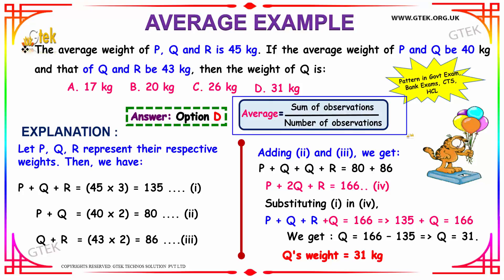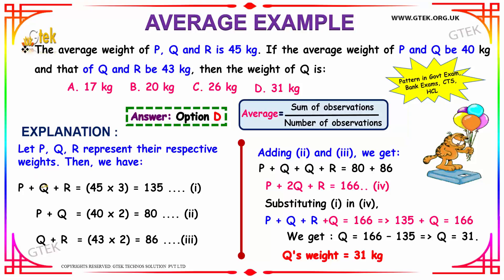The sum of observations — that is, the sum of the weights of P, Q, and R — is equal to average multiplied by number of observations. The average is 45 and the number of observations is 3, so 45 into 3 gives 135 as the sum of weights of P, Q, and R.